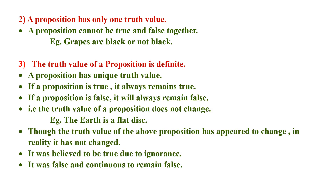Third characteristic: the truth value of a proposition is definite — a proposition has a unique truth value. If a proposition is true, it always remains true; if it is false, it will always remain false. The truth value does not change; it remains constant. For example: 'The earth is a flat disk.' Though this proposition's truth value appeared to change, in reality it did not. It was believed to be true due to ignorance; it was false and continues to remain false.